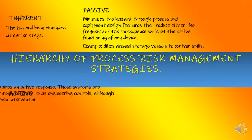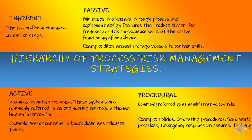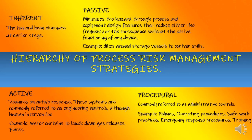The next strategy is active. Active strategies require an active response and are commonly referred to as engineering control, although human intervention is involved. For example, water curtains to knock down gas releases, and flares. The last strategy is procedural, commonly referred to as administrative control. Examples include establishment of policies, operating procedures, safe work practices, and emergency response procedures.